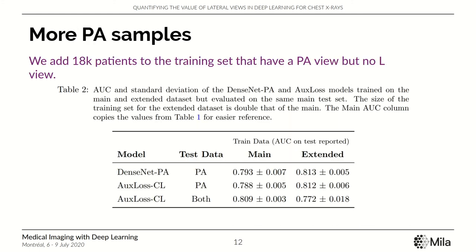For our second question, we did an experiment where we added the remaining patients that had only a PA view — no lateral — to our training set, keeping the test set the same. We see that even if we double the dataset size, the AUC is not significantly different from when we use paired views.